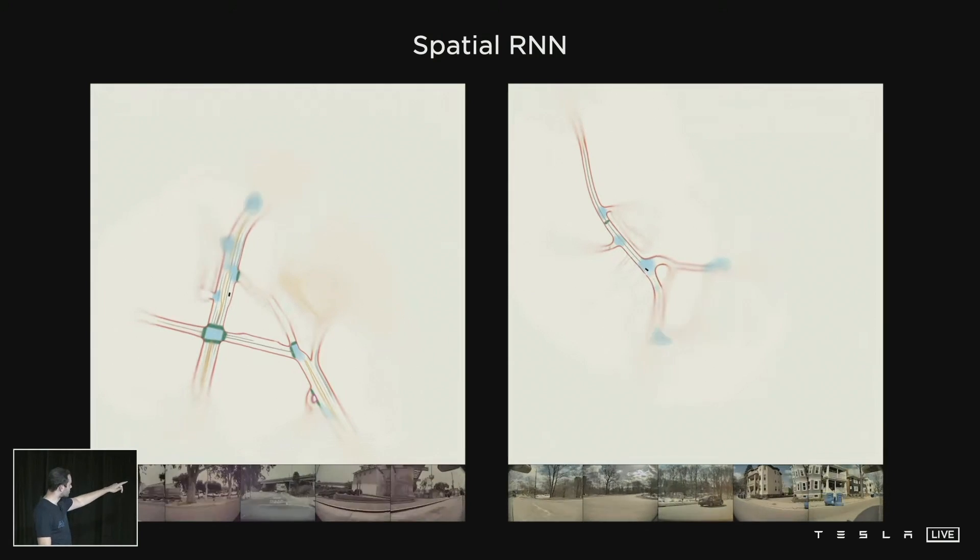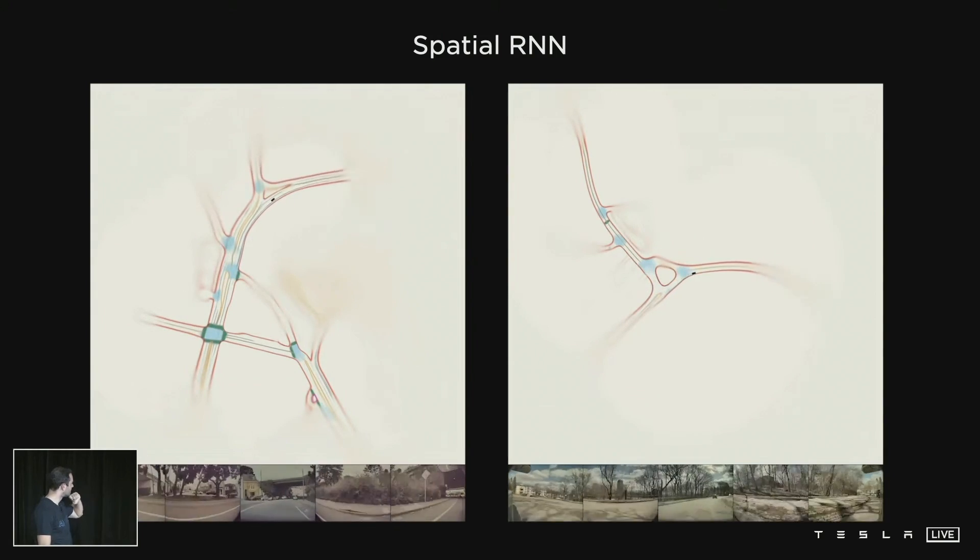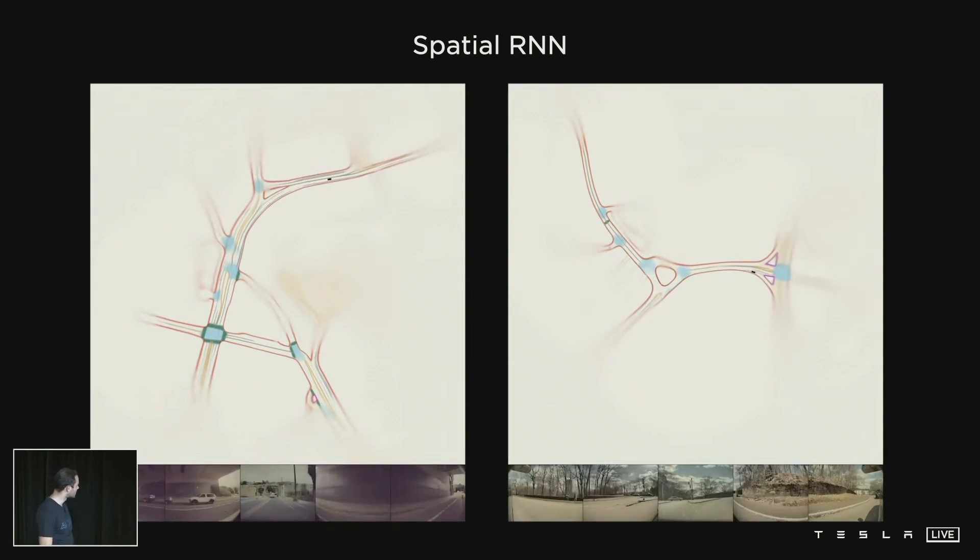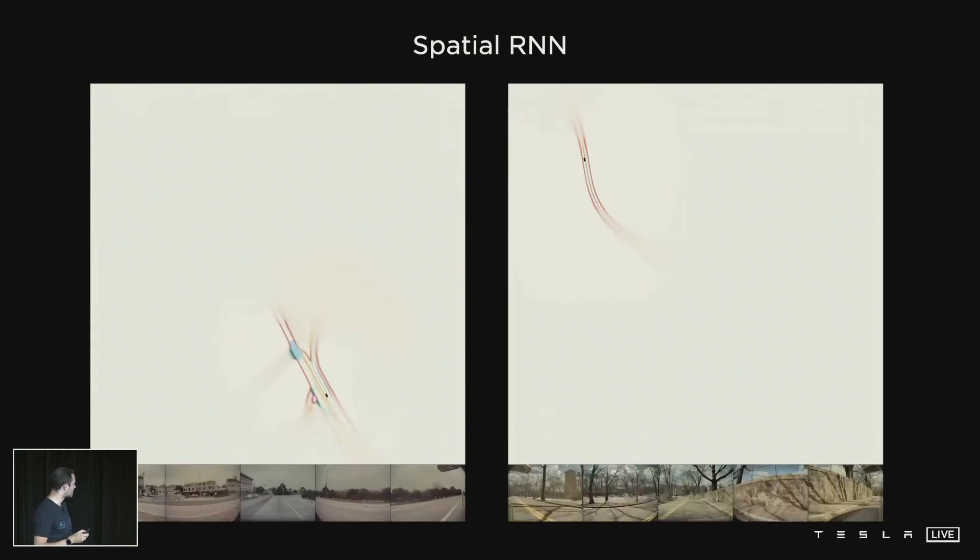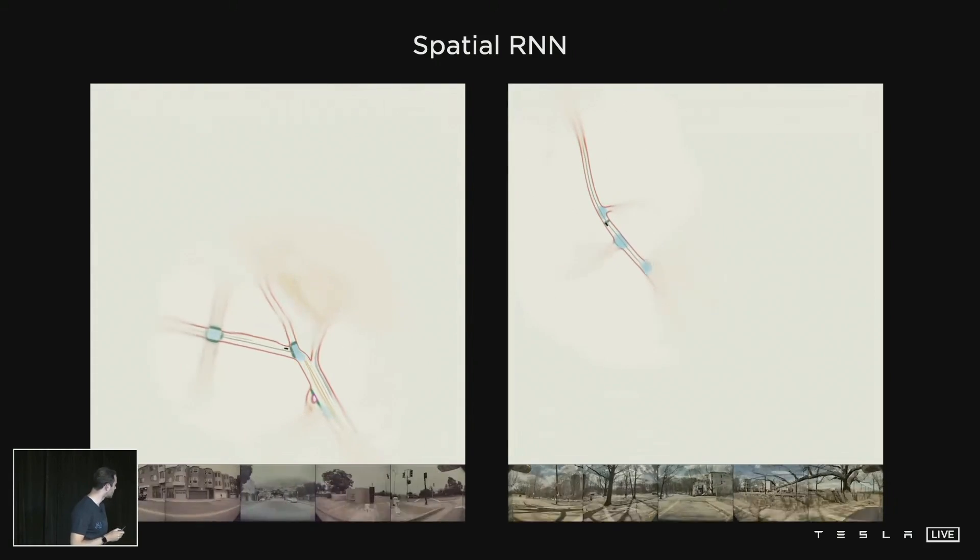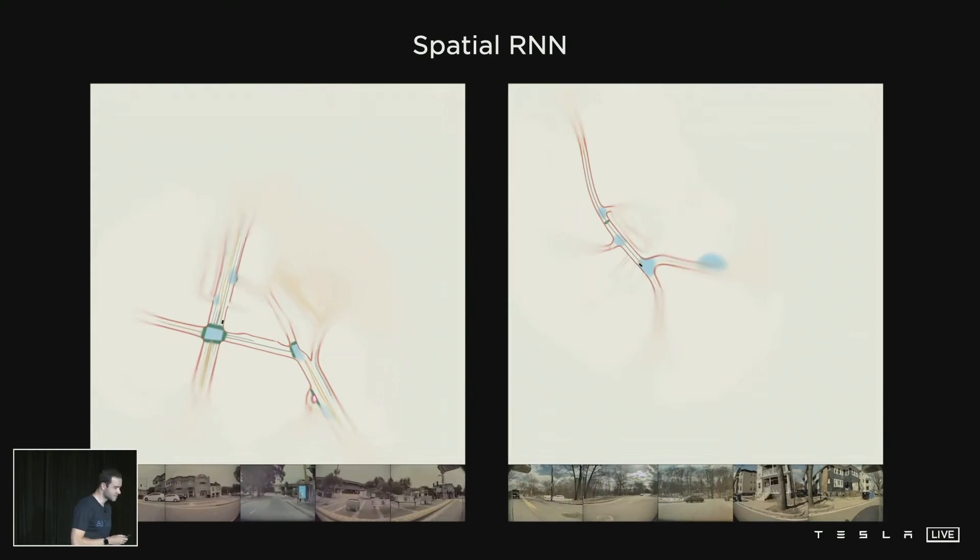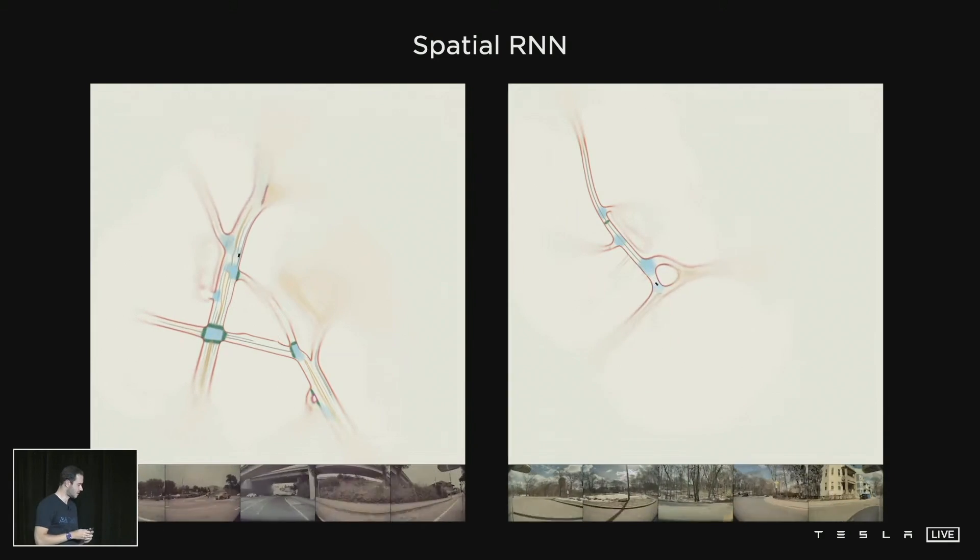Here we are making predictions about the road boundaries in red, intersection areas in blue, road centers, and so on. We're only showing a few of the predictions here just to keep the visualization clean. This is done by the spatial RNN.